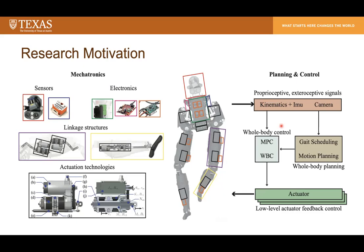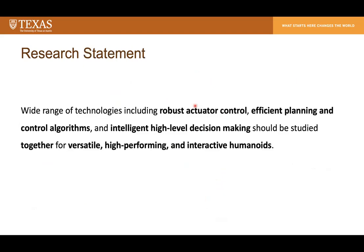One difficulty comes from the multidisciplinary nature of the field — elaborate actuation technologies, robust body planning, and control frameworks are all necessary for high-performing humanoids. For example, the biped robot Draco version 2 has only 10 degrees of freedom, yet involves many complicated mechatronics parts and algorithms. My PhD research statement is: for versatile, high-performing, and interactive humanoids, a wide range of technologies including robust actuator control, efficient planning and control algorithms, and intelligent high-level decision making must all be studied simultaneously.